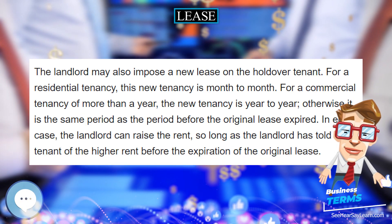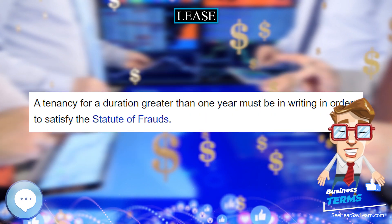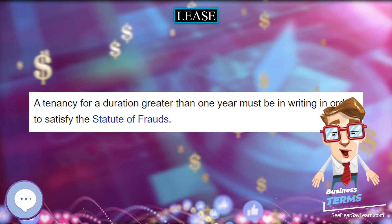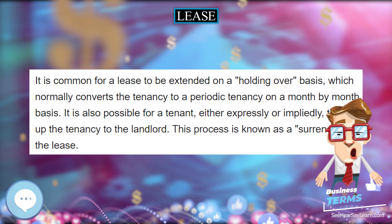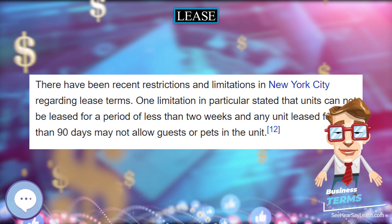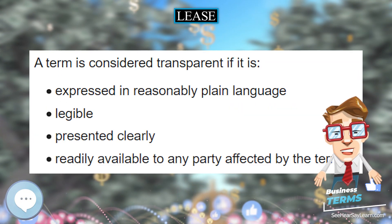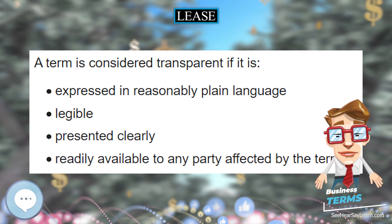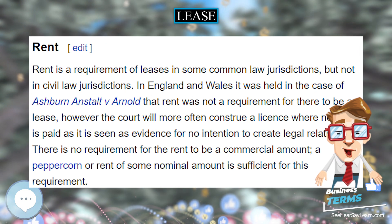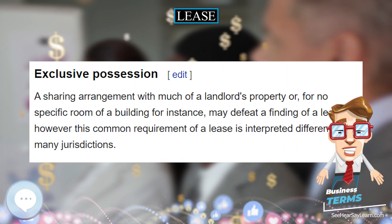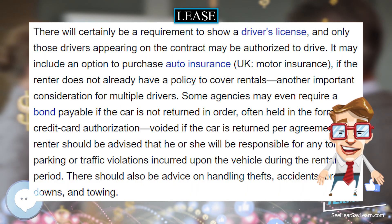Provisions specific to car rental. In addition to the above, a car rental agreement may include various restrictions on the way a renter can use a car, and the condition in which it must be returned. For example, some rentals cannot be driven off-road, or out of the country, or towing a trailer, without specific permission. In New Zealand you may have to specifically endorse a promise that the car will not be driven onto 90 Mile Beach because of the hazardous tides. There will certainly be a requirement to show a driver's license, and only those drivers appearing on the contract may be authorized to drive. It may include an option to purchase or motor insurance if the renter does not already have a policy to cover rentals. Some agencies may even require a bond payable if the car is not returned in order, often held in the form of a credit card authorization, voided if the car is returned per agreement.